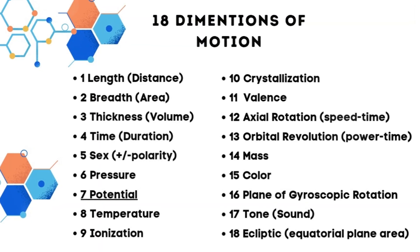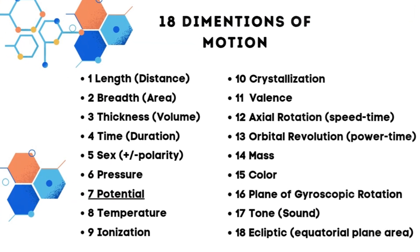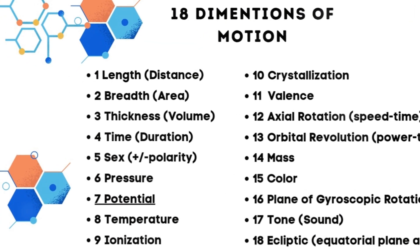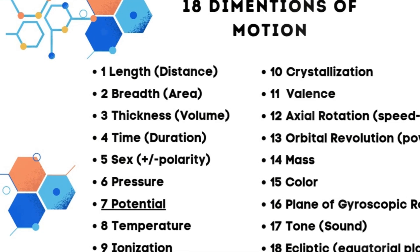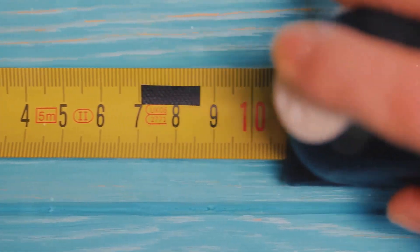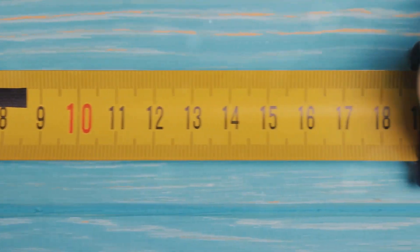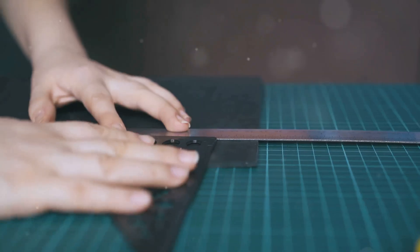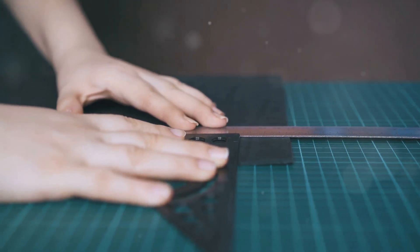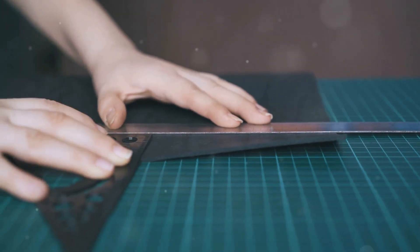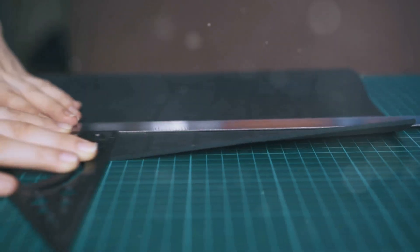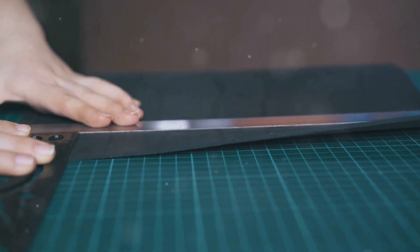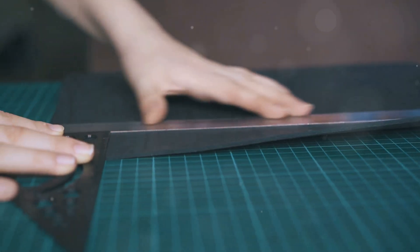He introduced 18 dimensions of motion, each representing a way to measure the fundamental aspects of matter. The type of dimensions we are referring to are just measurements, like the length of a table or the height of a door. They are not science fiction parallel universes. Russell's 18 dimensions are just 18 ways to measure the motion of matter. By understanding these measurements of motion, we can gain insight into how matter moves and reacts with other matter.